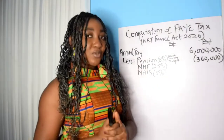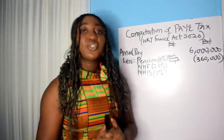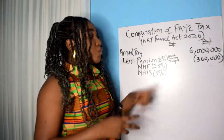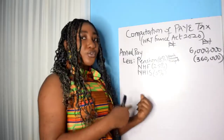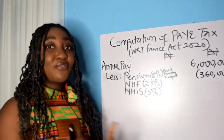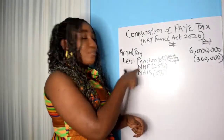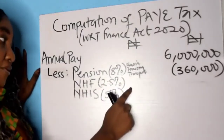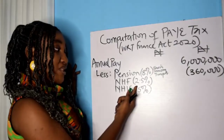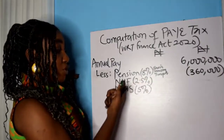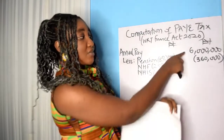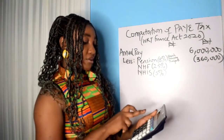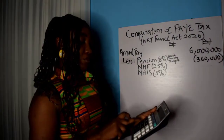Let me explain what these amendments mean. What the government is saying is that since pension, NHF, and NHIS are exempted from tax — they are not taxed — then we should not include them while computing your consolidated relief. The amount they are giving you as CRA is already exempted from tax; they are also exempting the portion of pension, NHF, and NHIS from tax. So the next thing to deduct is NHF, which is usually 2.5% of your housing.